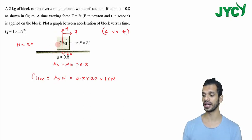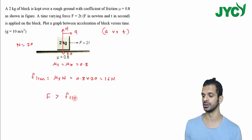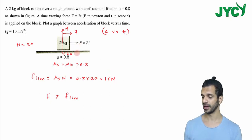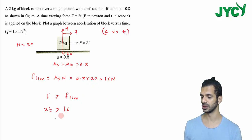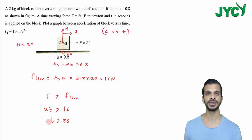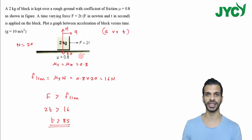To move this block, the external force must be greater than the limiting friction, which is 16 Newton. So the force 2t should be greater than 16. Therefore, t should be greater than 8 seconds.